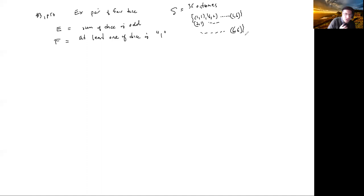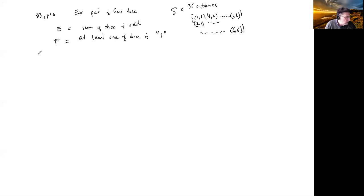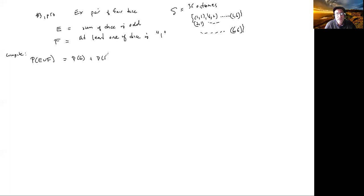Each outcome has probability 1/36 — they're all equally likely. The part of the problem I want to solve is: compute P of E union F. To do that we'll compute P(E) plus P(F) minus P(E intersect F).